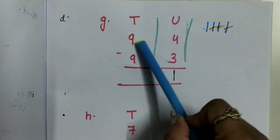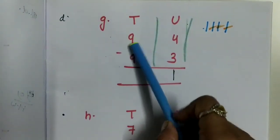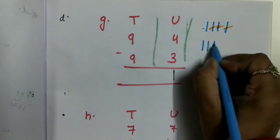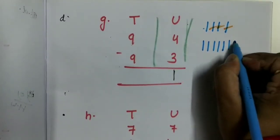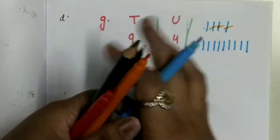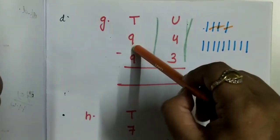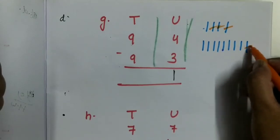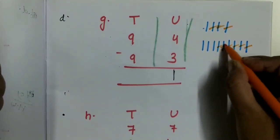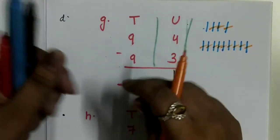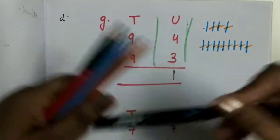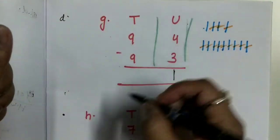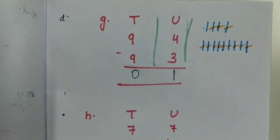Now 9 minus 9 — how many lines you have to draw? 9: 1, 2, 3, 4, 5, 6, 7, 8, 9. You have to take away 9, so cut: 1, 2, 3, 4, 5, 6, 7, 8, 9. How many lines are remaining? Nothing. So 9 minus 9 will be 0, because nothing is remaining. Write down 0.